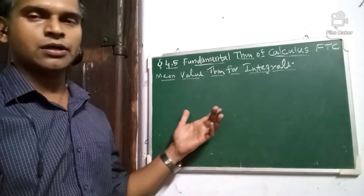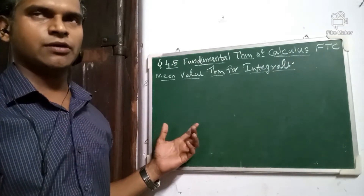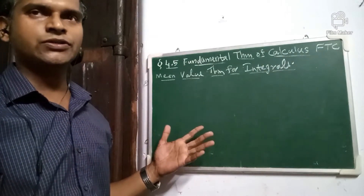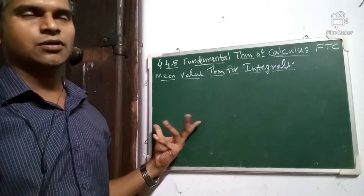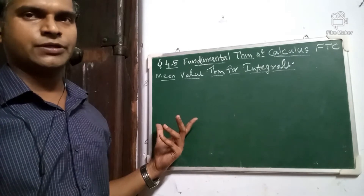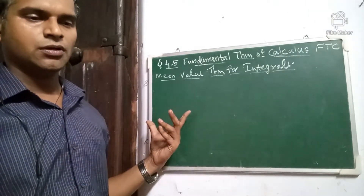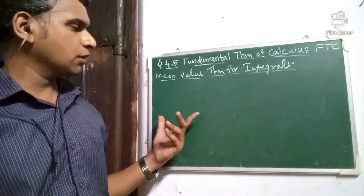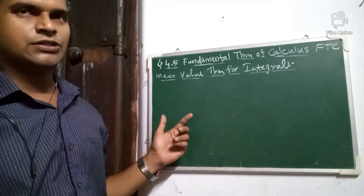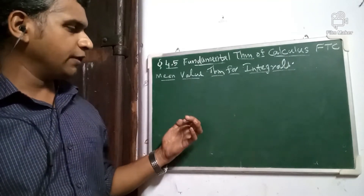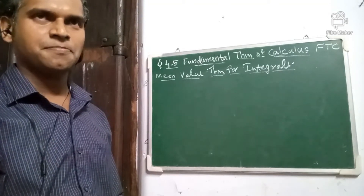Let us say minimum velocity is 10, maximum velocity is 80, and average velocity is 45 km per hour. If the average is 45, and the min is 10 and max is 80, we will not be able to say the average value is not attained.